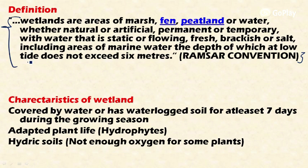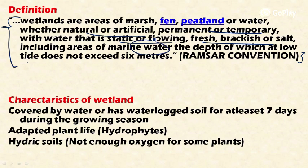The Ramsar Convention gives a very broad definition that includes a wide range of aquatic ecosystems as wetlands. Wetlands are areas of marsh, fen, peatland, or water, whether natural or artificial, permanent or temporary, with water that is static or flowing, fresh, brackish, or salt.